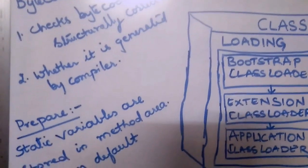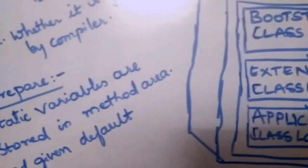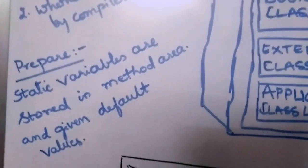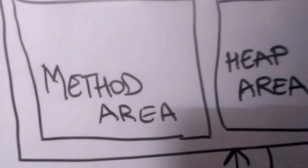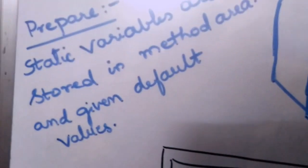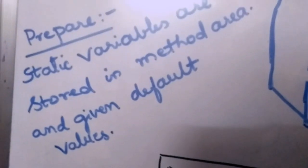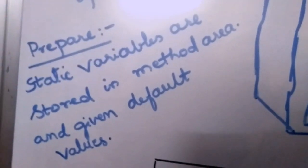The next phase in linking is the prepare phase. In the prepare phase, all static variables — which are class-level variables — are taken from the class and stored in the method area. The static variables are also given their default values: for int it is 0, for float it is 0.0, and for boolean it is false.